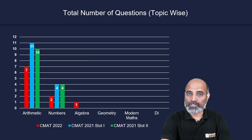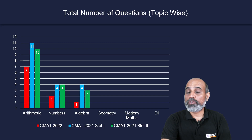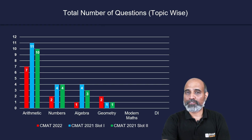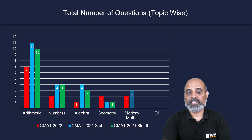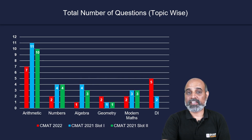For algebra, there was only one question in CMAT 2022, four questions in CMAT 2021 slot one, and three in slot two. Geometry had two questions in 2022, versus only one question in each slot of 2021. Modern math had two questions in 2022, and three questions in each slot of 2021. DI had five questions in 2022, only two in 2021 slot one, and four in 2021 slot two.